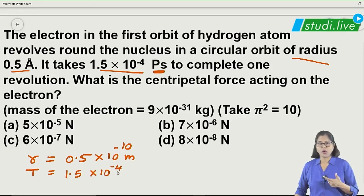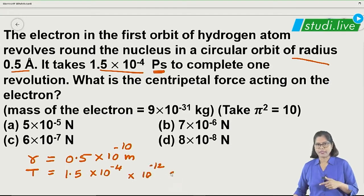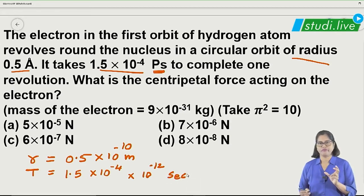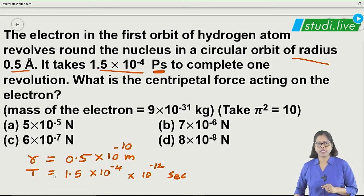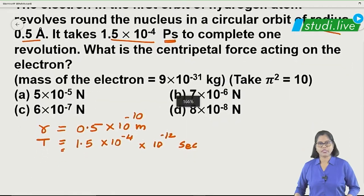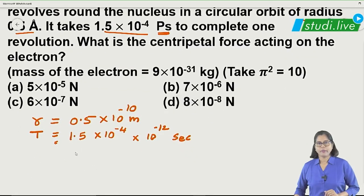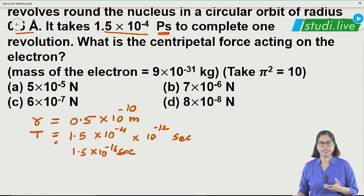The periodic time is given as 1.5 into 10 raised to minus 4 picoseconds. Pico means 10 raised to minus 12, so converting, the periodic time becomes 1.5 into 10 raised to minus 16 seconds.